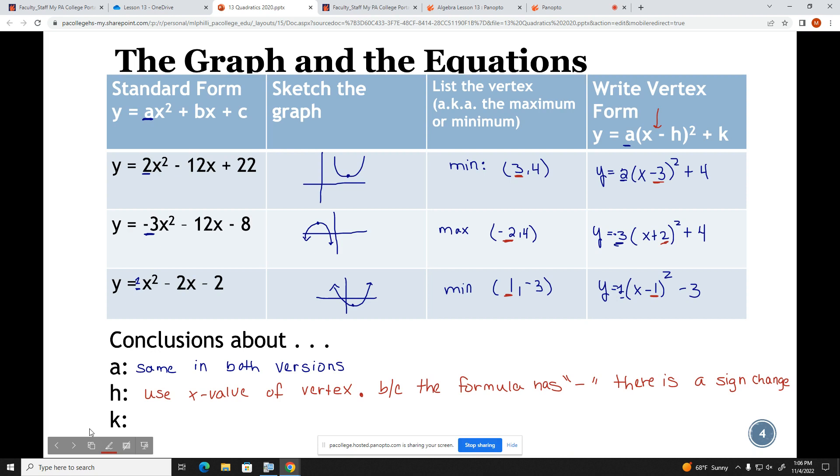I also notice that because the formula has a subtraction, there is a sign change. Finally, looking at k. What I notice about k is that it matches with the y value. This time in the formula, it is plus k. And so when I look at the y value of the vertex, it is exactly the y value or the k value in the vertex form. So for k, we will use the y value of the vertex.